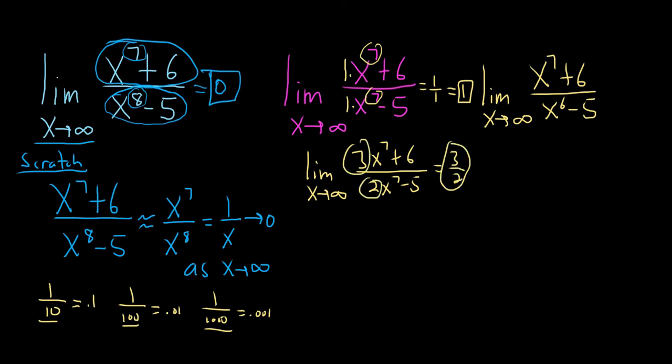So whenever it's bigger on the bottom, the answer is 0. Whenever the numbers match, the answer is the ratio, which means fraction, of the leading coefficients. That's what these are called, leading coefficients.